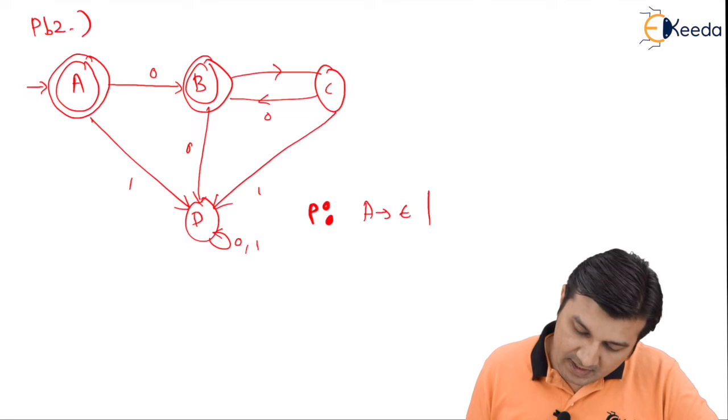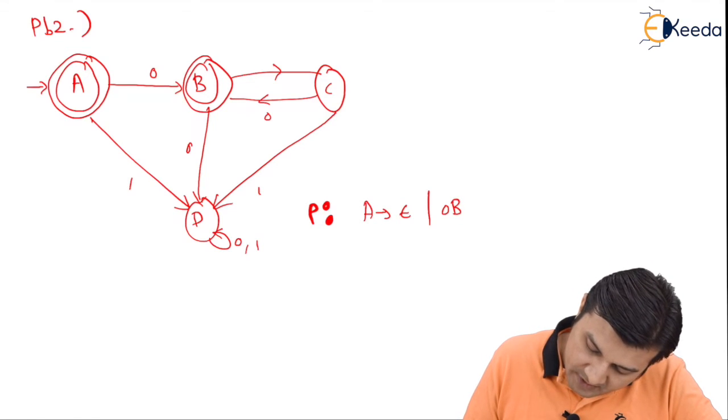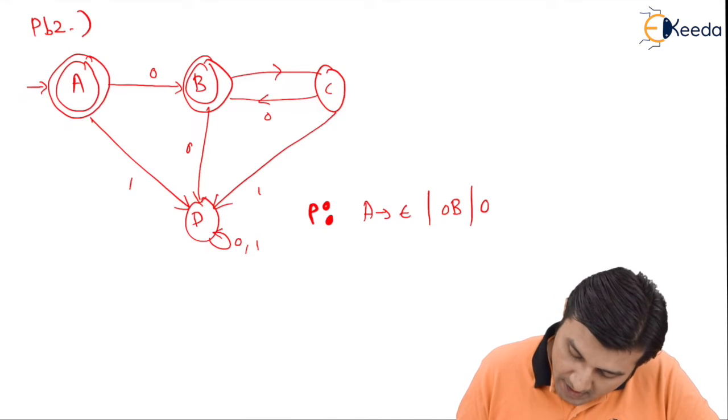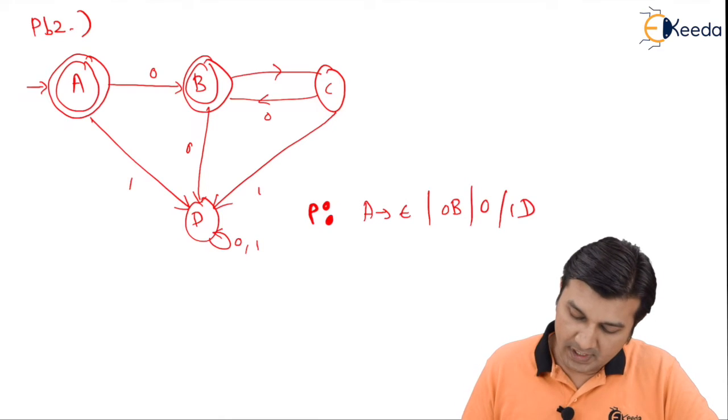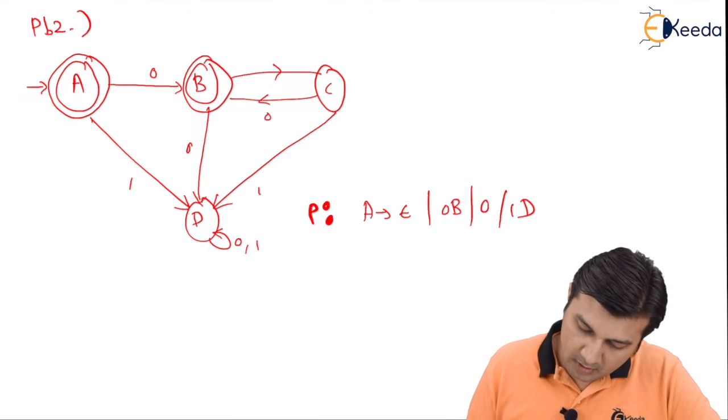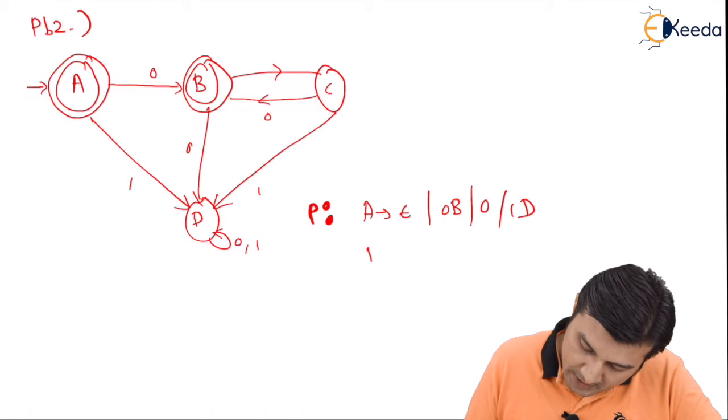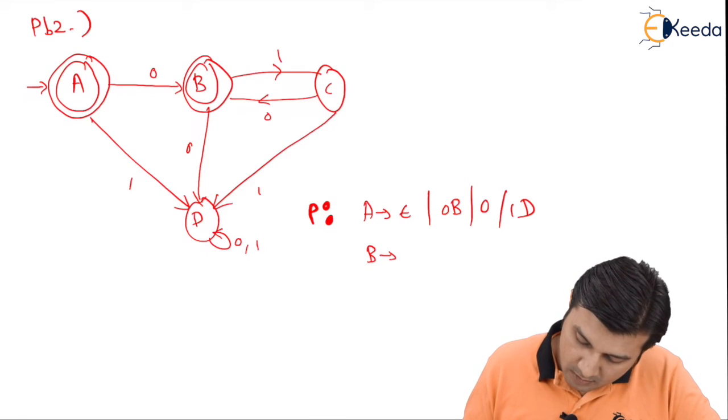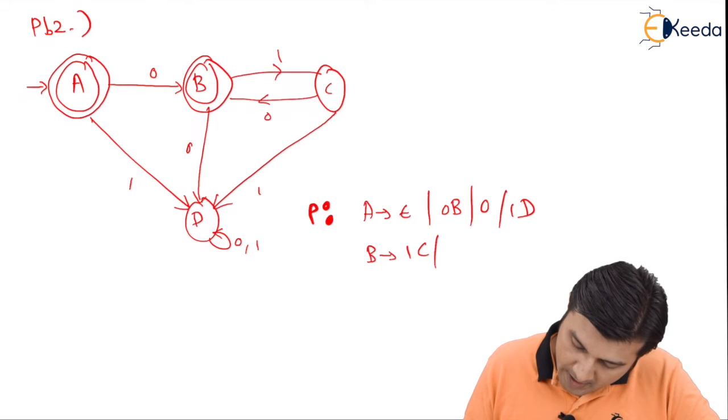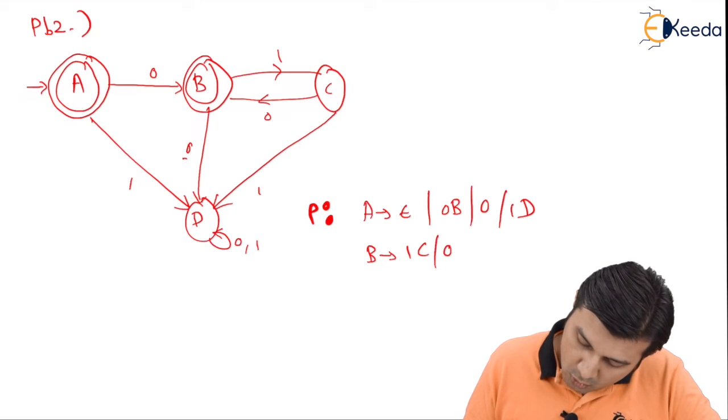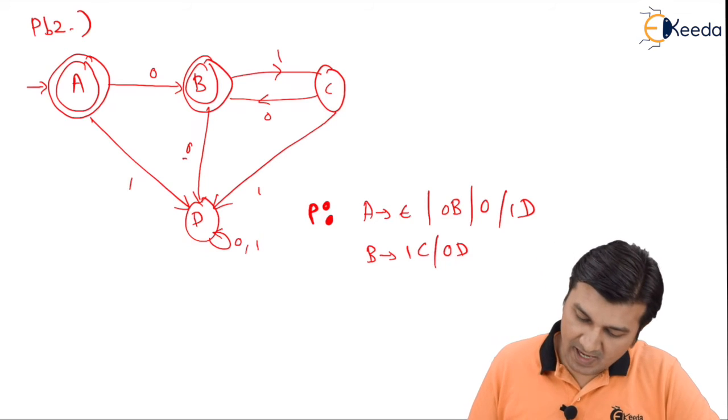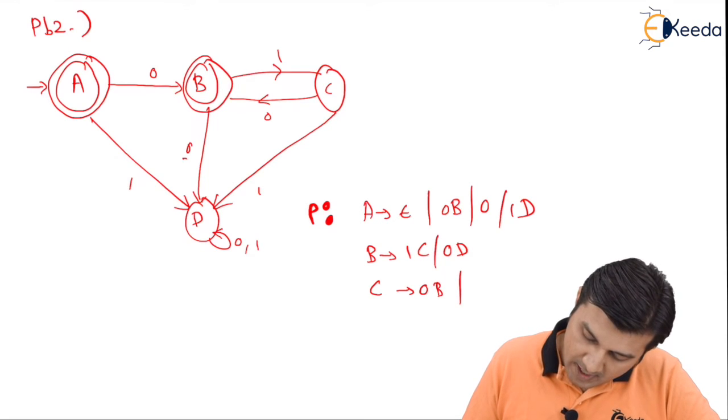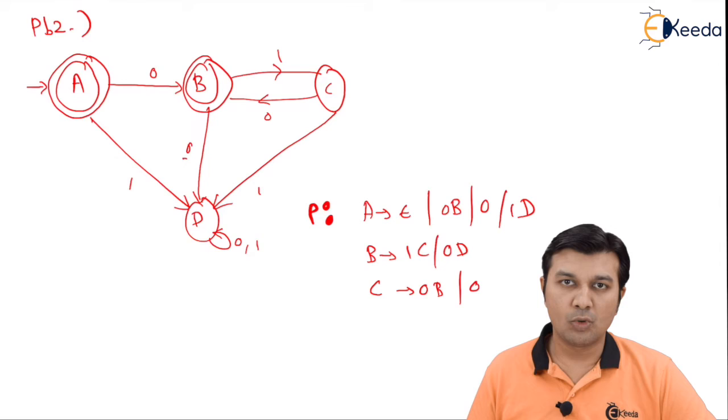I see that A on 0 goes to B, which is the final state. Therefore, it generates a 0 separately to 10. Then A on 1 goes to D. There are no more transitions on A. So we proceed to B. B on 1 goes to C and B on 0 goes to D. Then we have C on 0 goes to B, and since B is the final state, we write slash 0.